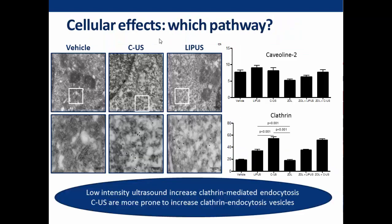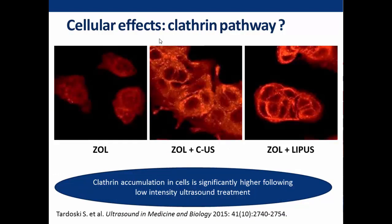We also investigated which protein is involved in the endocytosis process. Interestingly, only the clathrin protein was found to be involved in creating endocytosis. Caveolin showed no significant differences between groups, but clathrin production increased only in groups where ultrasound was applied. The major effect was again obtained when hyperthermia was combined with mechanical stress from low intensity ultrasound. This was confirmed by fluorescence microscopy, which showed significantly higher clathrin accumulation in cells treated by ultrasound, especially those treated with ultrasound involving hyperthermia and mechanical stress.